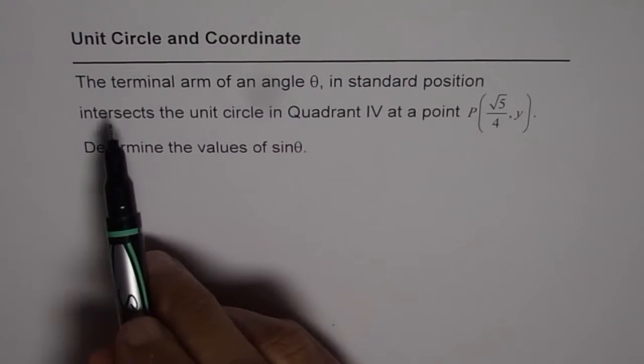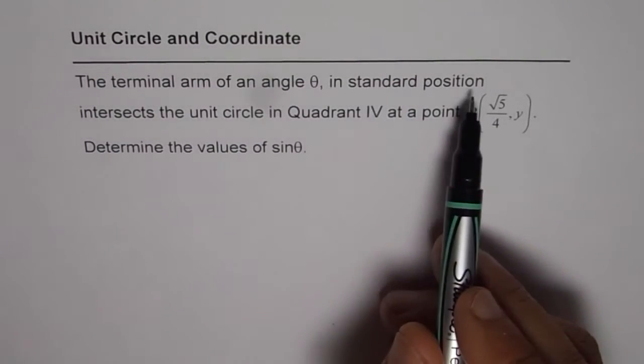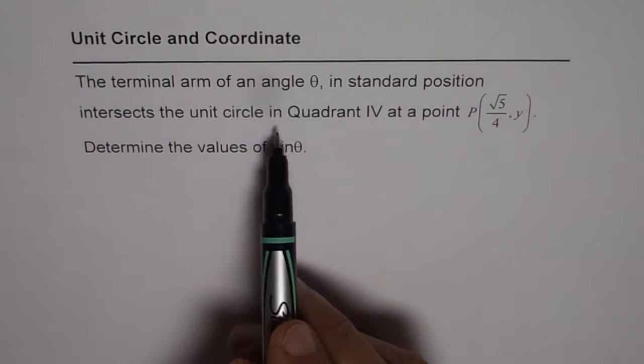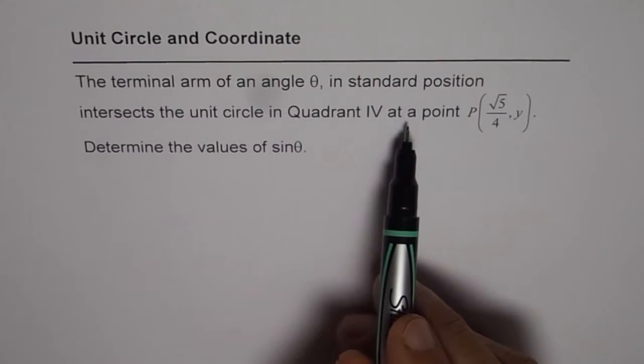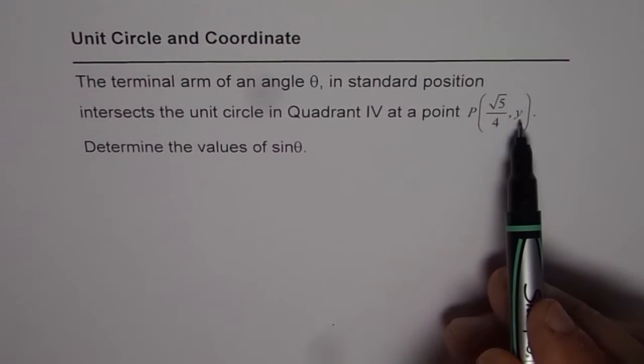It says the terminal arm of an angle theta in standard position intersects the unit circle in quadrant 4 at a point P, square root 5 over 4 comma y.